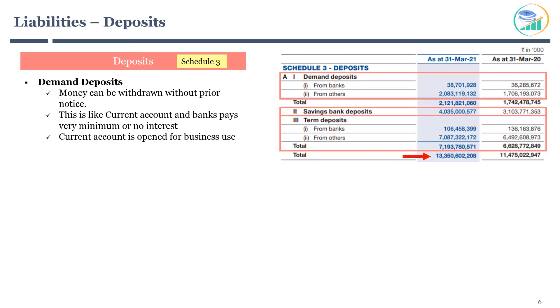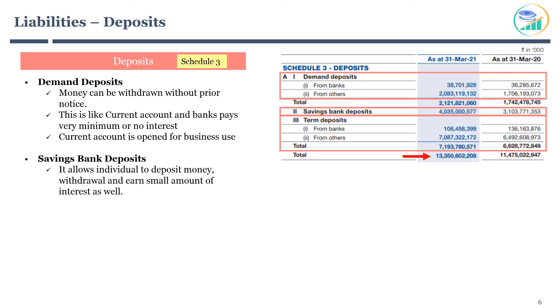The next line item is savings bank deposits. It allows individuals to deposit money, make withdrawals, and earn a small amount of interest as well. All individual account holders typically have a savings account.